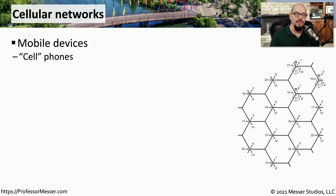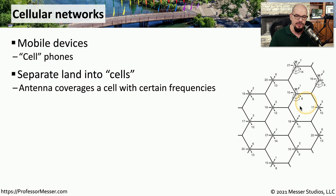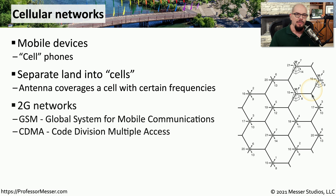If you use a mobile phone to communicate, we often refer to these as cell phones. That's because we've broken our geography into multiple cells. We placed an antenna where those cells meet, and we're sending all of the communication across that particular area using that antenna.